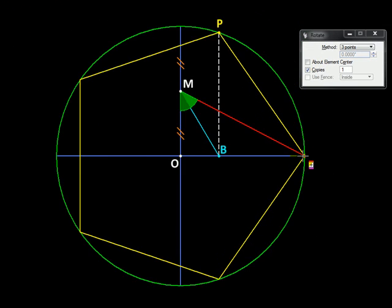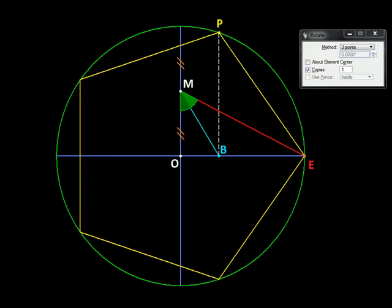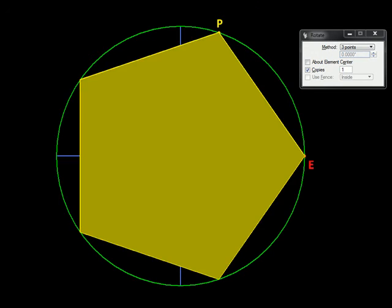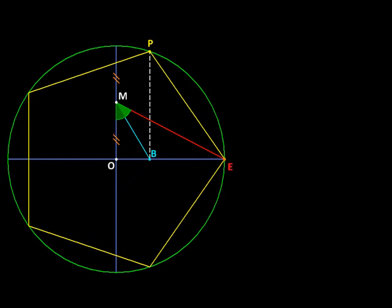So let us do it mathematically. Let us check if the pentagon that we got over here is a perfect pentagon or not, and if so, why. So let us do a little derivation.